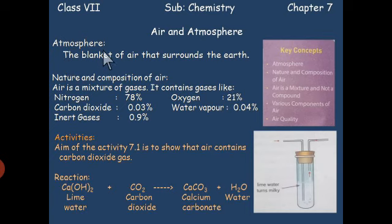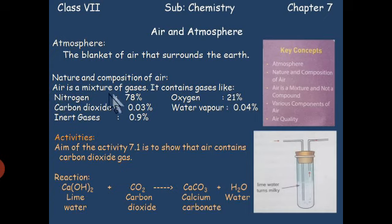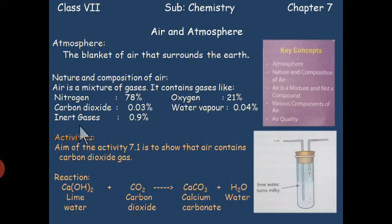The blanket of air that surrounds the earth is called the atmosphere. In the second key concept we discussed that air is a mixture of gases. It contains nitrogen 78%, oxygen 21%, carbon dioxide 0.03%, water vapor 0.04%, and inert gases 0.9%.